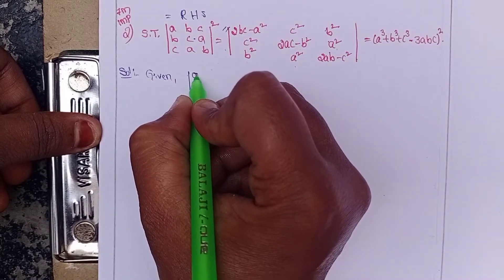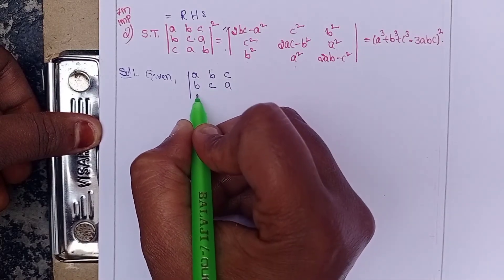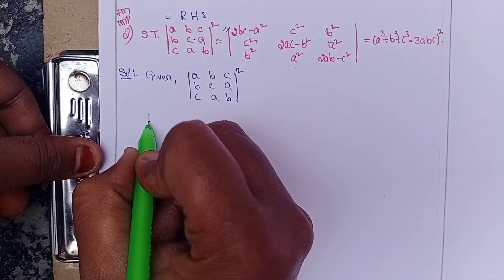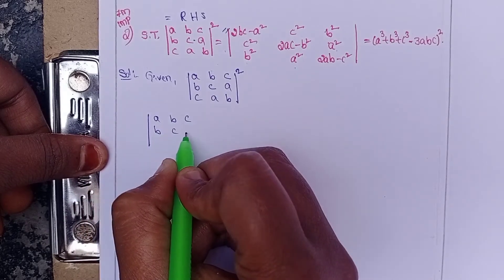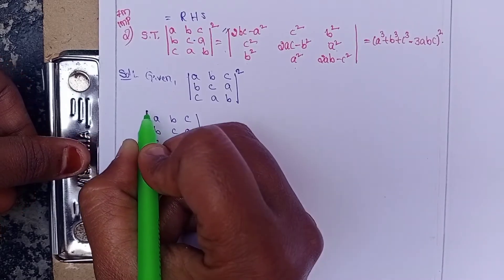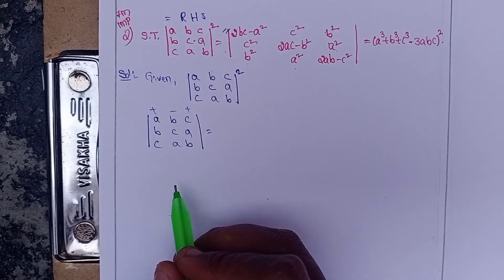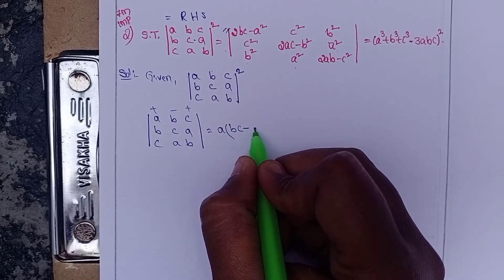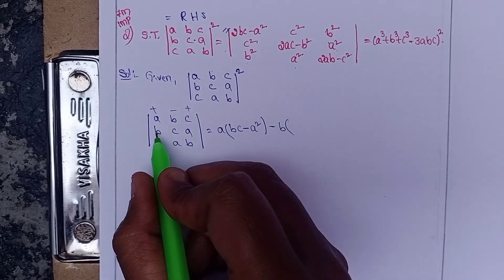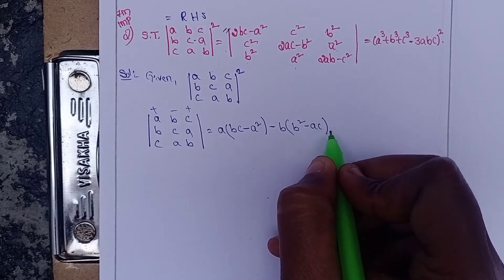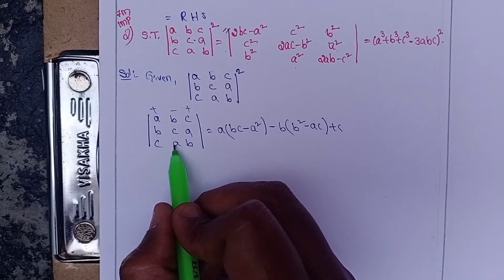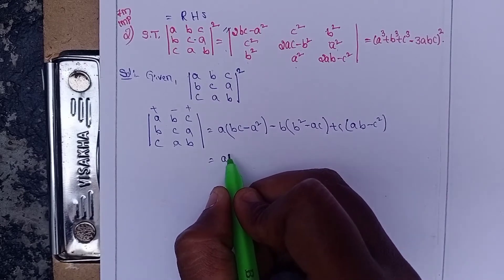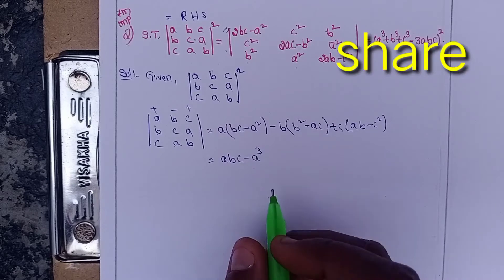First, the LHS is given as the determinant of [a,b,c; b,c,a; c,a,b] whole square. First take the single determinant. Expanding: plus a times (bc - ca), which gives -a² minus b times (b² - ac), plus c times (ab - c²). So we get a(bc - c²) - b(b² - ac) + c(ab - c²).